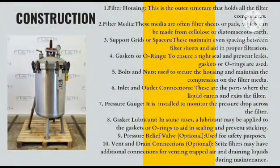The seventh element is pressure gauges. A pressure gauge is often installed on the filter housing to monitor the pressure drop across the filter. This helps operators determine when the filter media needs replacement or cleaning. Next comes gasket lubricant. In some cases, a lubricant may be applied to the gaskets or o-rings to aid in sealing and prevent sticking.